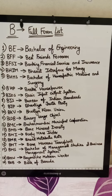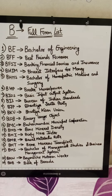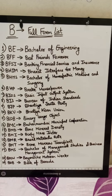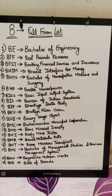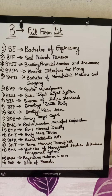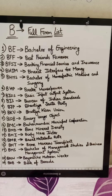B-H-P stands for Brake Horse Power. B-I-O-S stands for Basic Input Output System. B-I-S stands for Bureau of Indian Standards. B-J-P stands for Bharatiya Janata Party, which is India's ruling government at this time.